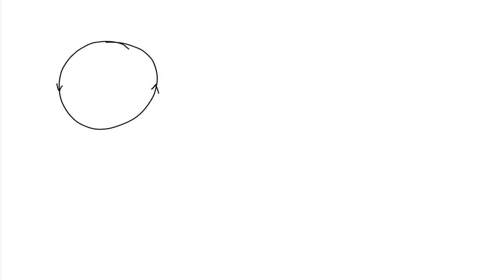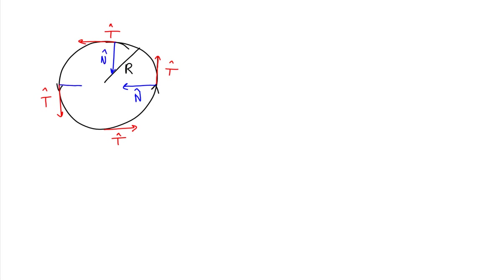Let's look at a curve — otherwise known as a circle. This circle has a particular radius, and every point on this circle has a unit tangent vector that is tangent to the point on that circle. At each of these unit tangent vectors there is also a unit normal vector that points towards the center of the circle of radius r.